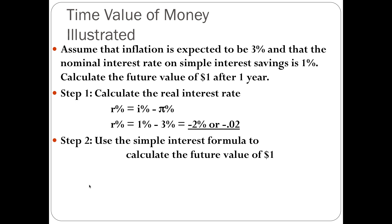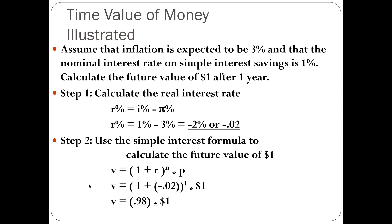Next, use the simple interest formula to calculate the future value of $1. The formula is V equals (1 plus R) to the N times P. Plugging in: V equals (1 plus negative 0.02) to the 1, times $1, which gives $0.98 times $1 equals $0.98. Notice that because the inflation rate was greater than the nominal interest rate, the future value of that dollar actually declined — inflation took away the value of that dollar.